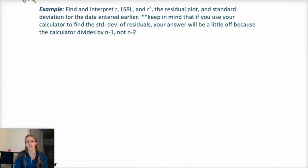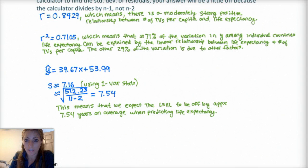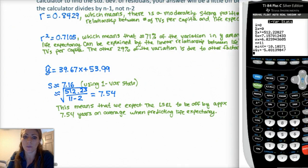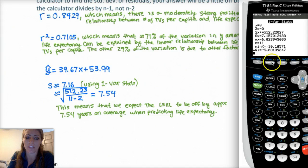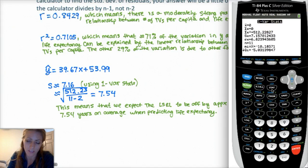But keep in mind that if you use the calculator to find the standard deviation of the residuals, your answer will be a little off because you're calculated divided by n minus 1, not n minus 2. Here are your answers. Make sure you understand the interpretation and context. And if you need help with the standard deviation, here's your one-var stats, which you get with stat calc, and then one-var stats, my residuals are on list 3. And so my s of x is the 7.16, and then I use the sum of the squares divided by 9, square root of it.